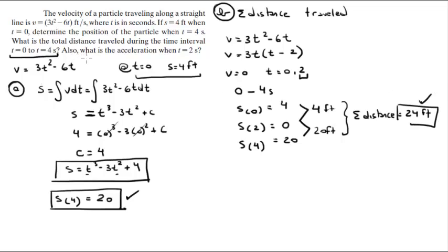Now we have the total distance. They want you to find the acceleration. Let's call it part c. The acceleration, you know, is the derivative of the velocity with respect to time. So all you need to do is derivate this equation, and when you do, you get that the acceleration is equal to 6t minus 6.